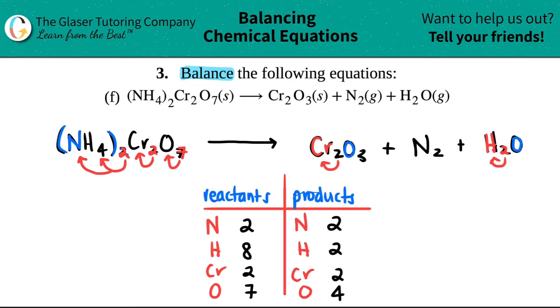All right. Now we just have to take a tally. Looks like the nitrogens are already balanced. Looks like the chromiums are already balanced. So I need to balance the hydrogens and I need to balance the oxygens.